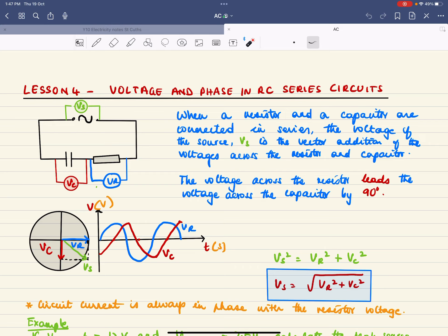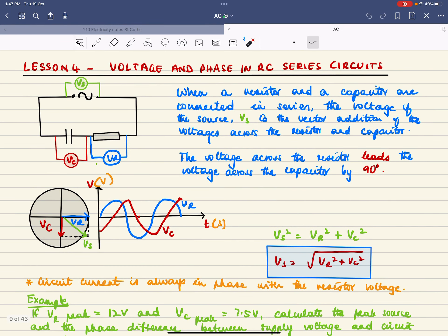This is your supply voltage by completing the parallelogram. Using Pythagoras, if you take this right angle triangle—this is your VR, that's your VC—so your VS is the square root of VR squared plus VC squared.